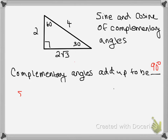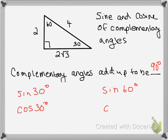We're going to look at the sine of 30°, cosine of 30°, sine of 60°, and cosine of 60°. Using 30° as our reference angle, we label the sides: opposite, adjacent, and hypotenuse. Sine of 30° is opposite over hypotenuse, which is 2 over 4. In the calculator, that gives us 0.5 — so sine of 30° is 0.5.